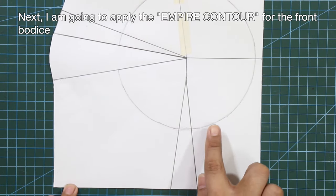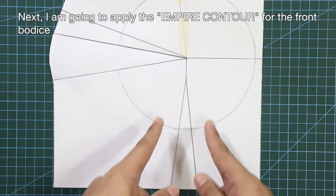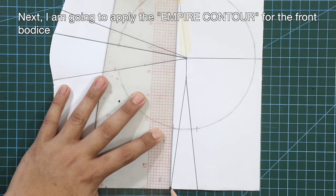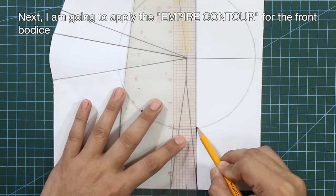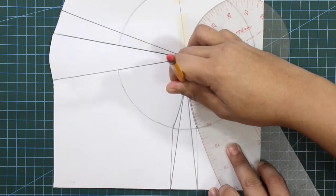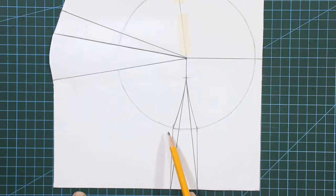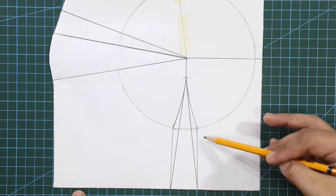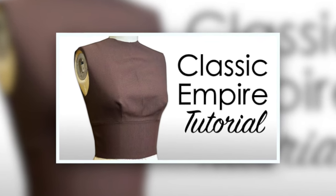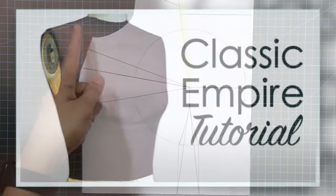Next, I'm going to apply the empire contour for the front bodice. By the way, if you're new to my channel, I have a separate tutorial for the empire waist contour and make sure to check it out.